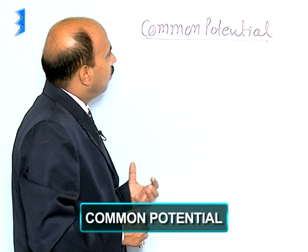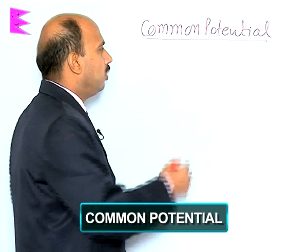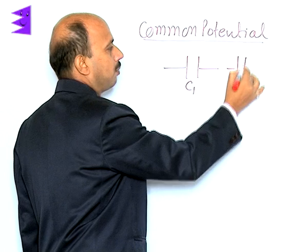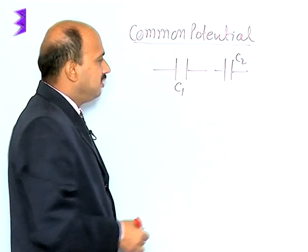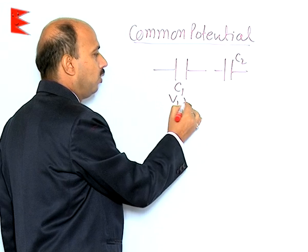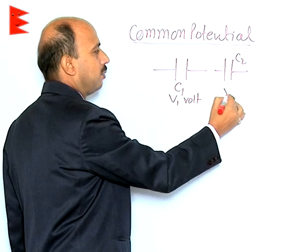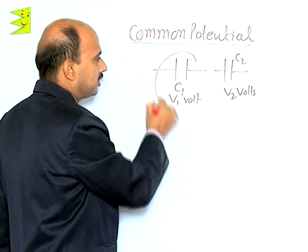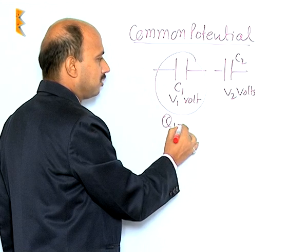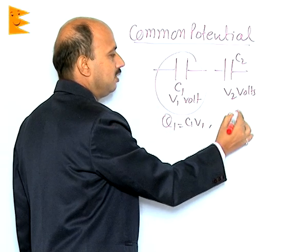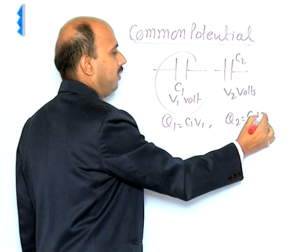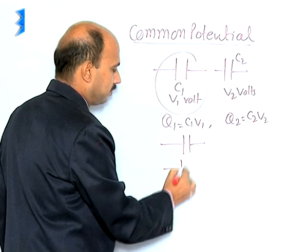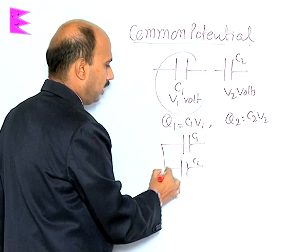Now let us discuss the concept of common potential. Suppose you have two capacitors: one with capacitance C₁ charged by a battery of V₁ volts, and another with capacitance C₂ charged by a battery of V₂ volts. When charged, the charge in C₁ is q₁ = C₁V₁ and charge in C₂ is q₂ = C₂V₂. Now these two capacitors are connected together.